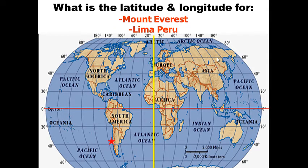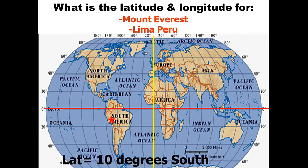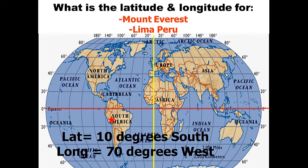Let's do Lima, Peru. These don't fall exactly on the lines, so be careful. Go ahead and record the latitude and longitude coordinates for Lima, Peru. Don't just copy the answer — think about it, because it won't help you on the test. Hopefully you came up with about 10 degrees south of the equator and 70 degrees west.